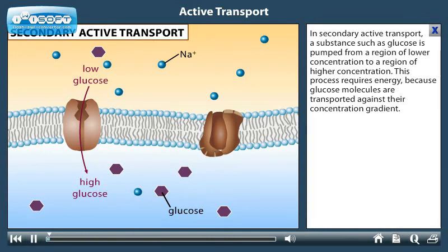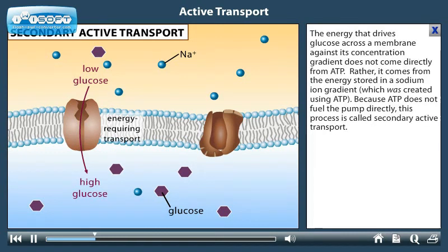In secondary active transport, a substance such as glucose is pumped from a region of lower concentration to a region of higher concentration. This process requires energy because glucose molecules are transported against their concentration gradient. The energy that drives glucose across a membrane against its concentration gradient does not come directly from ATP. Rather, it comes from the energy stored in a sodium ion gradient, which was created using ATP. Because ATP does not fuel the pump directly, this process is called secondary active transport.